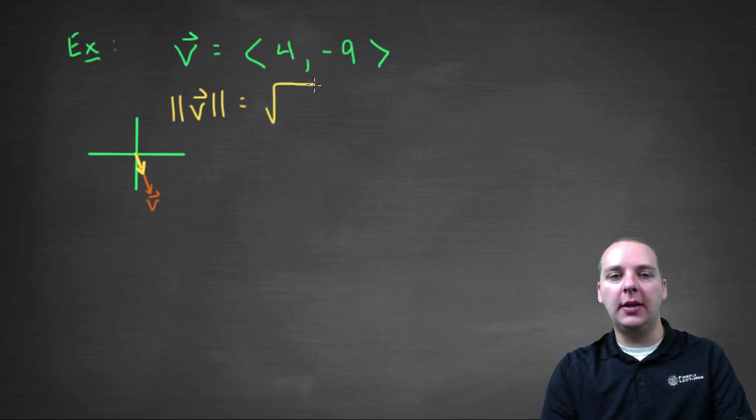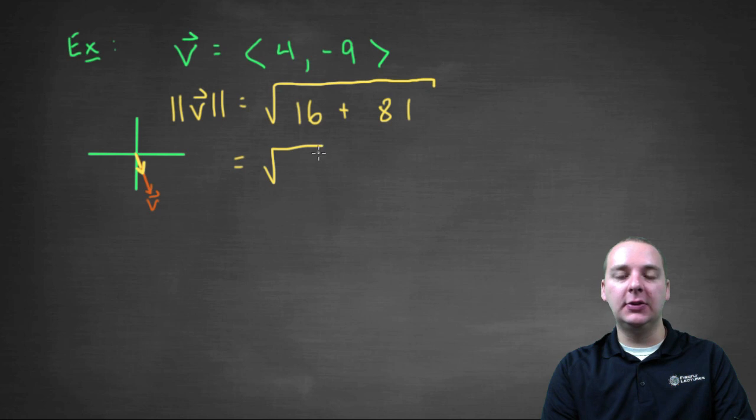And so we know how to find the magnitude of a vector. We'll take the first component squared, which is sixteen, plus the second component squared, which is positive eighty-one. We'll add those two guys, we'll get the square root of ninety-seven.